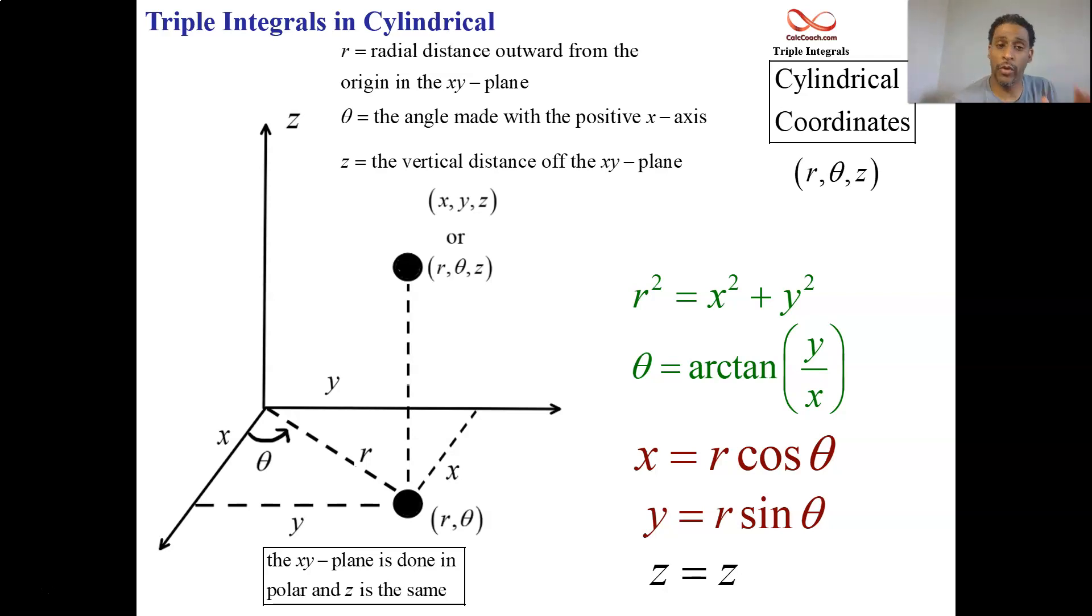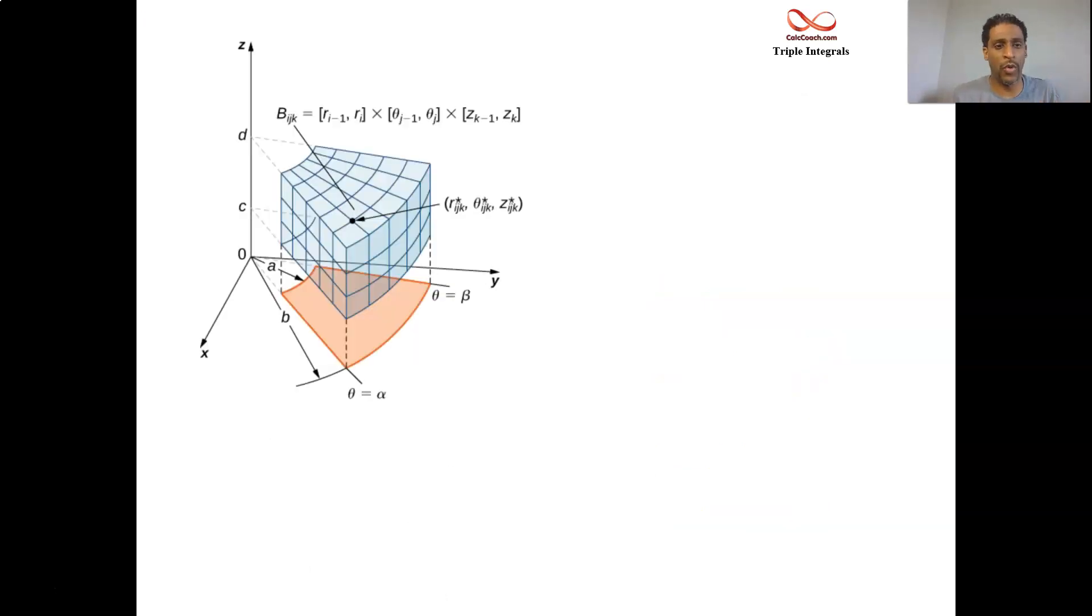So our triple integrals will be in terms of r, theta, and z. And the element of area that we calculated, called the Jacobian, to do double integrals in polar, that r will still persist. We could do it from the Jacobian again, or here's a more visual way.